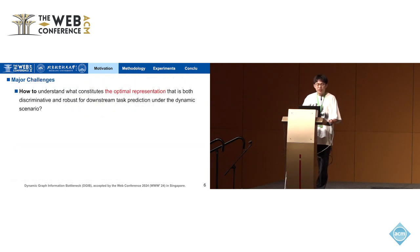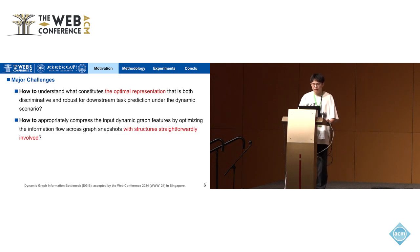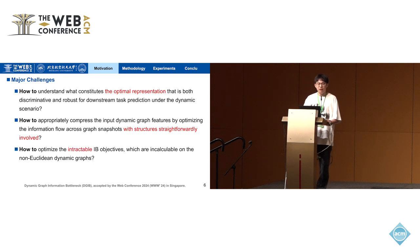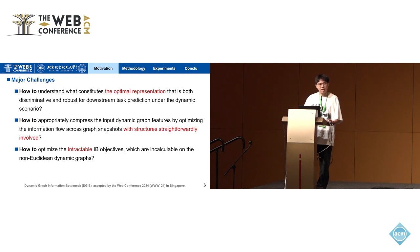We face three main challenges. The first is how to understand what constitutes the optimal representation that is both discriminative and robust. The second is how to appropriately compress the input dynamic graph data with graph structures straightforwardly involved. The third is how to optimize the intractable IB objectives to make them calculable on non-Euclidean dynamic graph data.